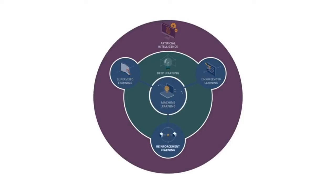You will also see deep learning in the cycle. That's where a lot of the excitement has been recently, particularly with regards to image recognition, natural language processing, and speech recognition. Deep learning can be combined with supervised, unsupervised, and reinforcement learning. So what exactly is AI?